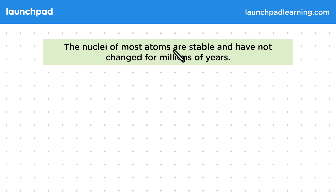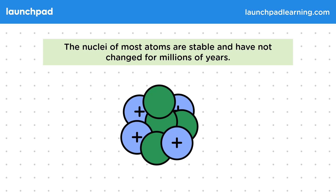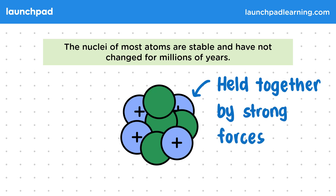The nuclei of most atoms are stable and have not changed for millions of years. Remember that the nucleus is made up of protons and neutrons, which are held together by strong forces. Nuclei don't even change during chemical reactions, as the energy changes are too small, so only the electron configuration changes.